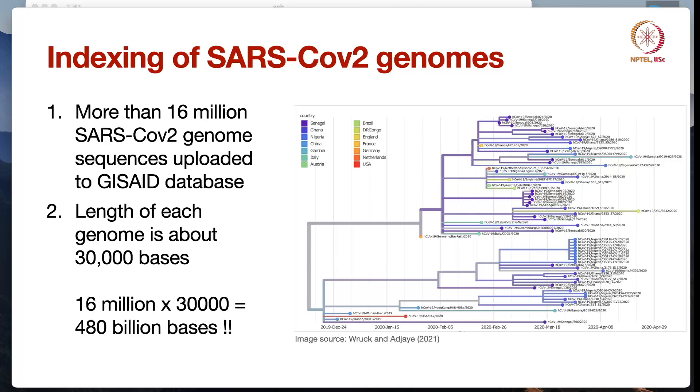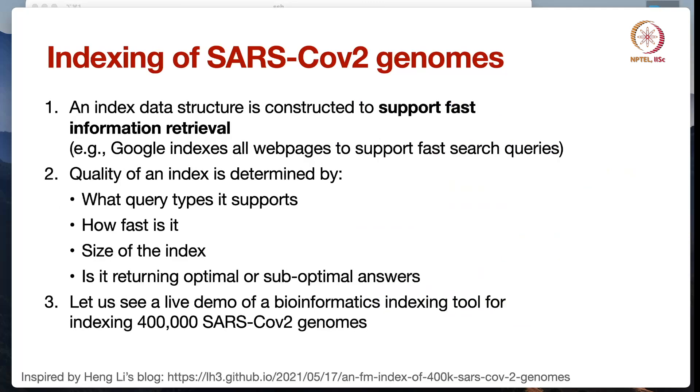So, as the data was generated and uploaded, there was also need for efficient algorithms to analyze this amount of data. Now, why do we need indexing? Well, any index data structure is always constructed to support fast information retrieval from a large data corpus.